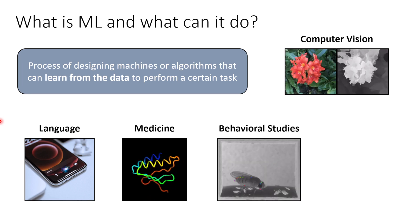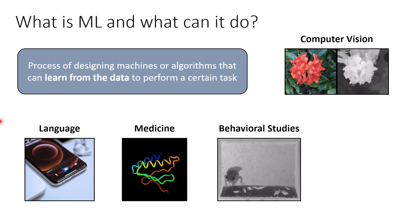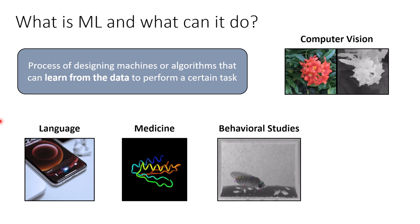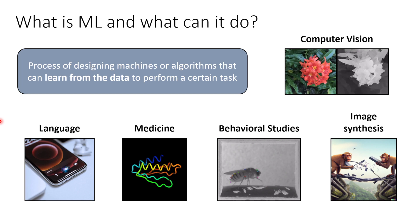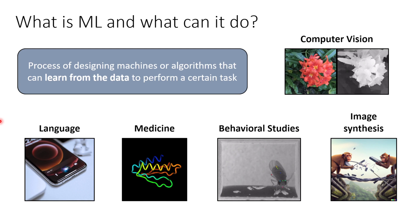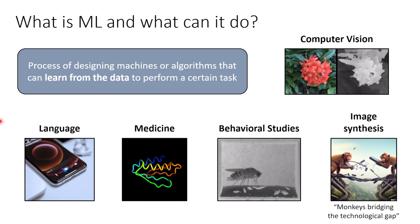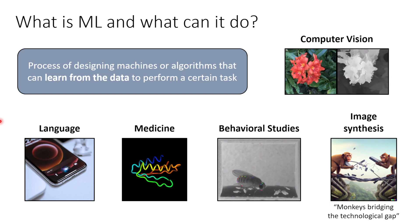Behavioral studies is another domain where, for instance, you can track the movement of a subject by simply defining some key points on the subject, and the algorithm will keep track of those key points using only the video input. And finally, image synthesis — here you see an image generated by an algorithm for specific input text describing the image. In this example the text was 'monkeys bridging the technological gap.' We also used these models to generate the title images for each topic in this short course.